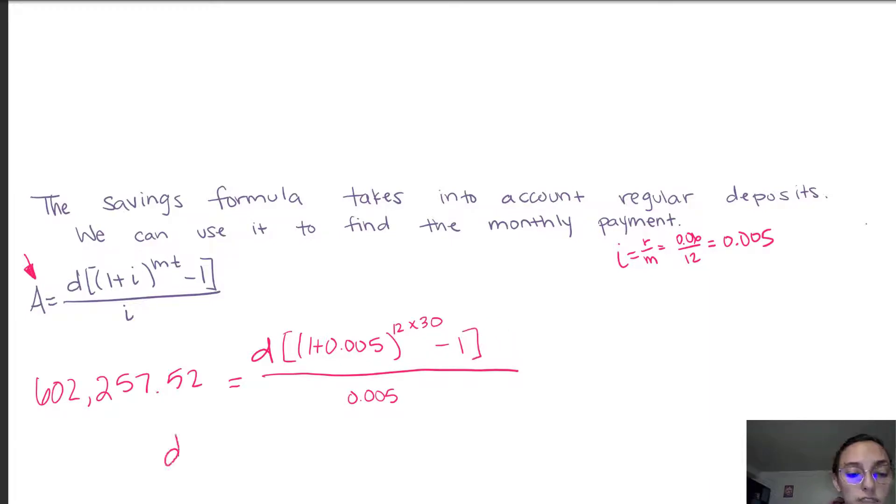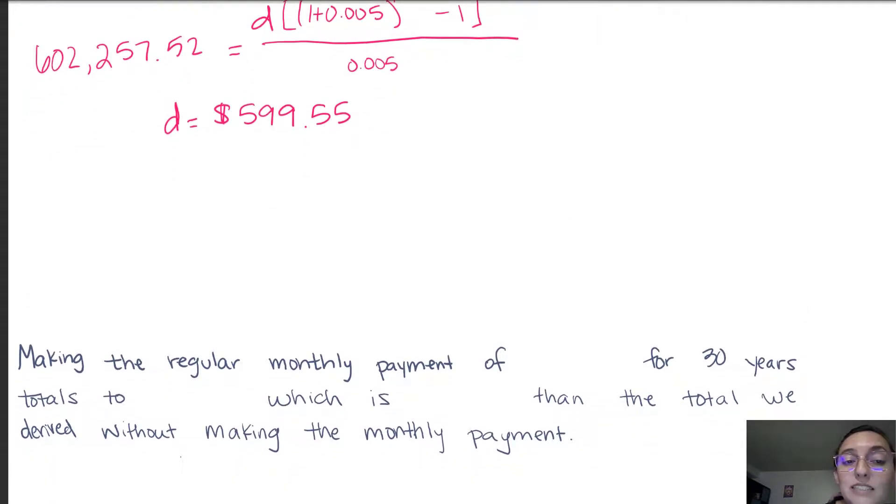Now once we solve for D, we get that the monthly deposit is $599.55. So this is going to be our monthly deposit or the monthly payment. Now something that is really cool about this is this monthly payment, if we make the regular monthly payment of $599.55 for those 30 years, we make it again every month, this totals out to be $215,838 which is less than the amount that we derived when we were assuming that we were not making monthly payments.